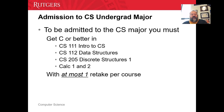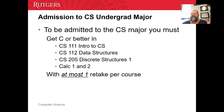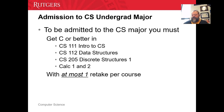Admission to the undergraduate major: for freshmen just coming in, it's simple. You need to take five classes — intro to computer science, data structures, discrete math or discrete structures 1, and then calculus 1 and calculus 2. These five classes are special in that you only get two chances to get a C or higher. If you fail intro and then the second time you get a D, you won't be able to be admitted as a CS major in the School of Arts and Sciences. So be careful with those original five courses.